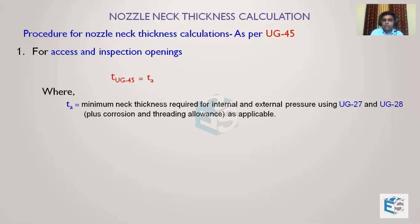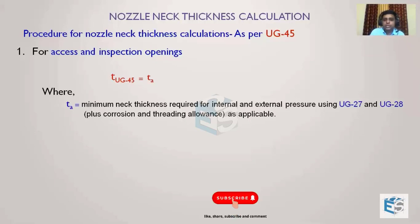T_A is the minimum neck thickness required for internal and external pressure. For internal pressure, UG27 is applicable; for external pressure, UG28 is applicable. To the calculated thickness we add corrosion allowance or threading allowance if applicable. This is the bare minimum thickness that should be available in the nozzle if it is an inspection or access opening.